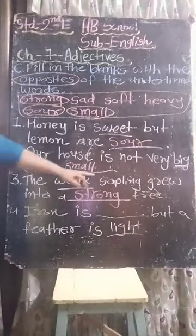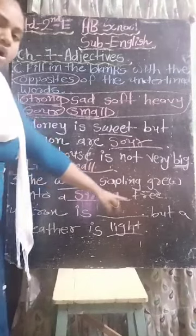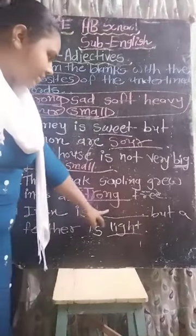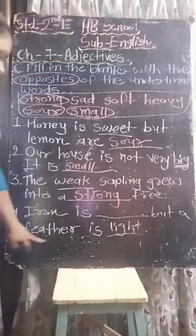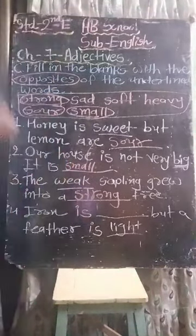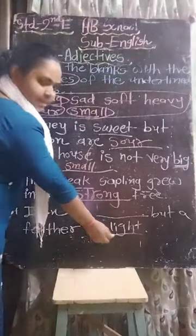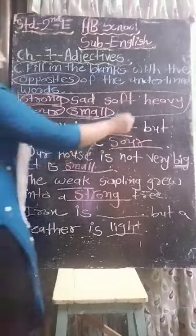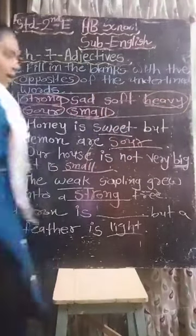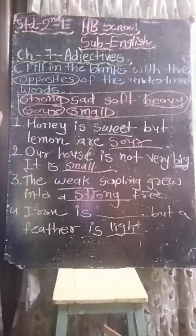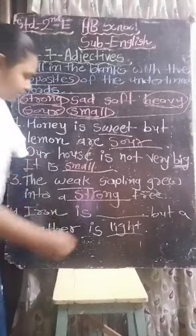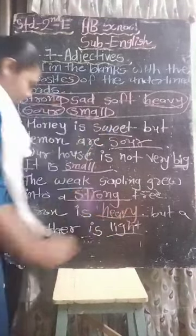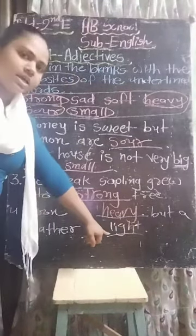Fourth one: iron is dash but a feather is light. The underlined word is light. Light ka opposite क्या है? Heavy. Write down here: iron is heavy but a feather is light.